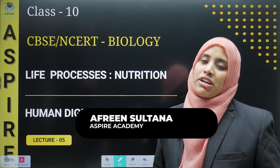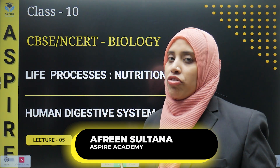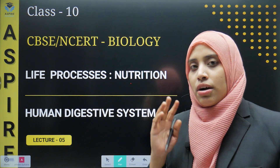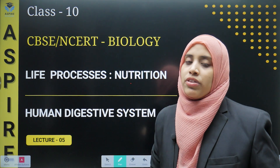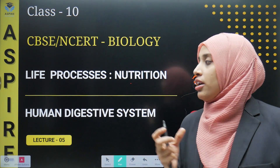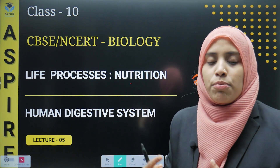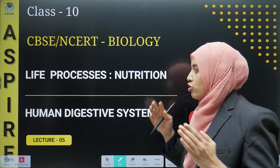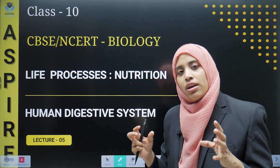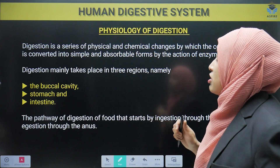Hello everyone, this is Afrin from Aspire Academy. This is the 5th lecture of Class 10th topic — Life Processes: Nutrition. We have done nutrition in lectures 1 to 4. Now we will see what are the steps of digestion and the whole physiology of our digestion — how the food goes through different processes and how our different nutrients break down. Since it is the human digestive system, we are learning about humans only.